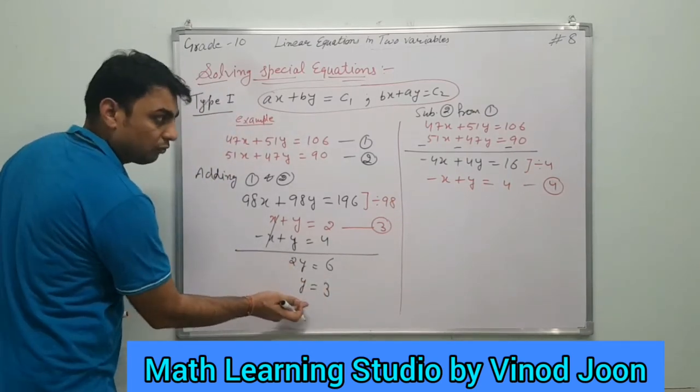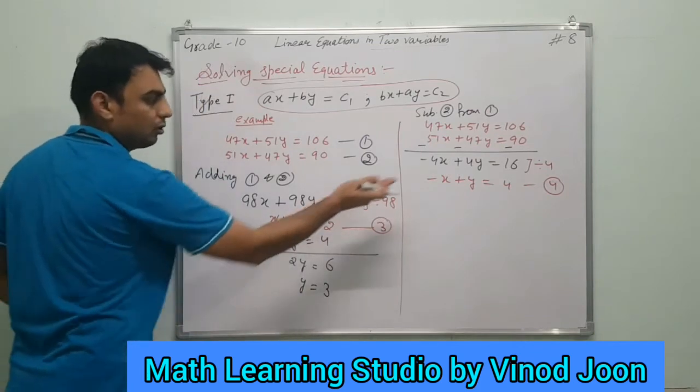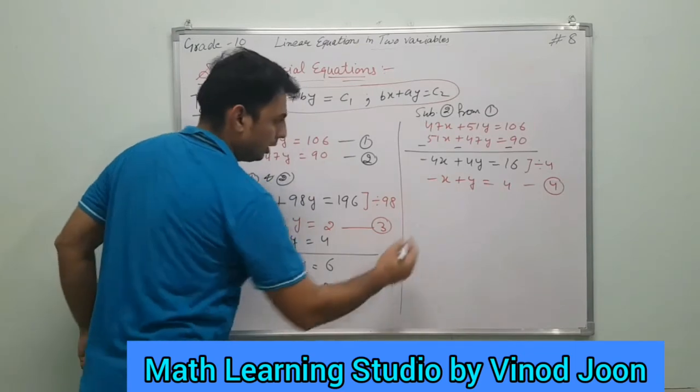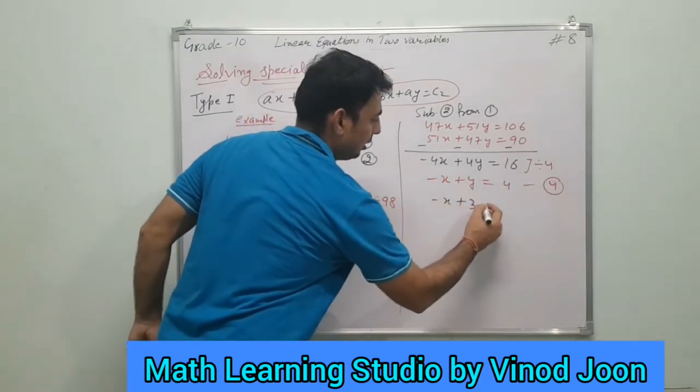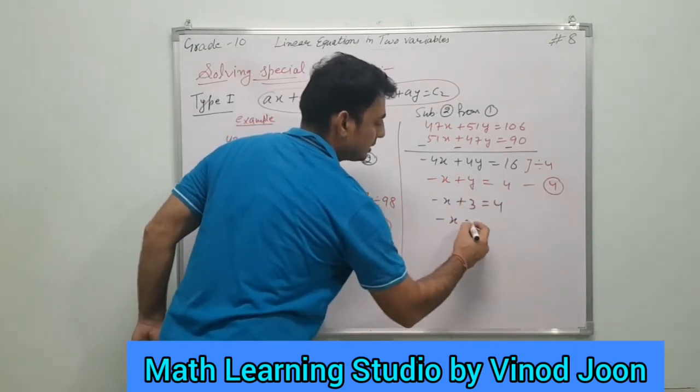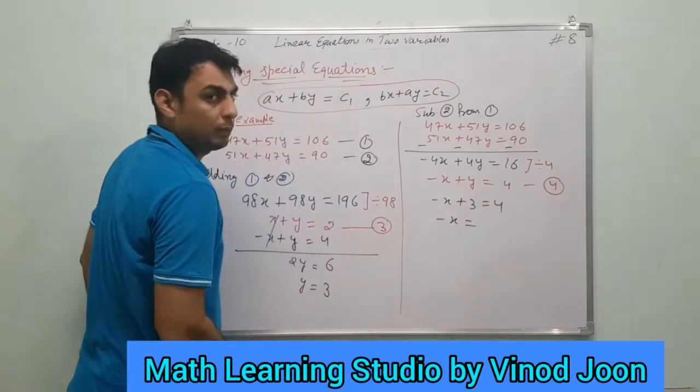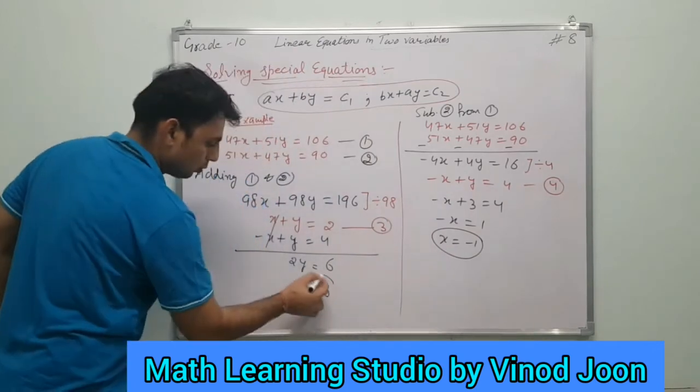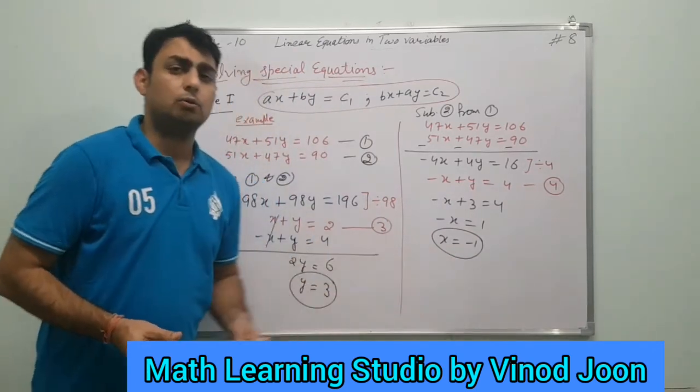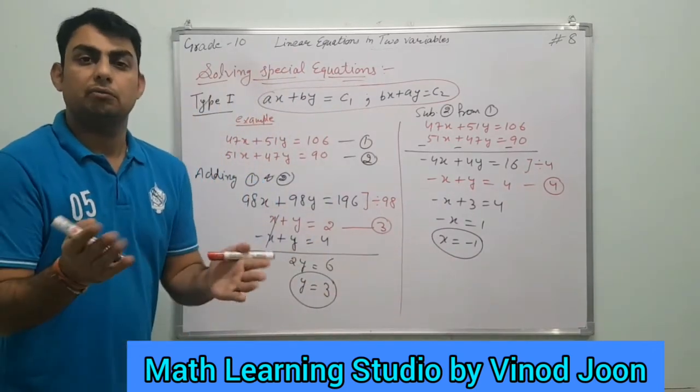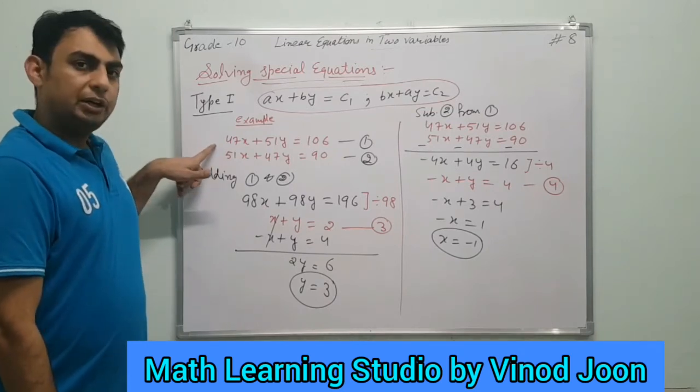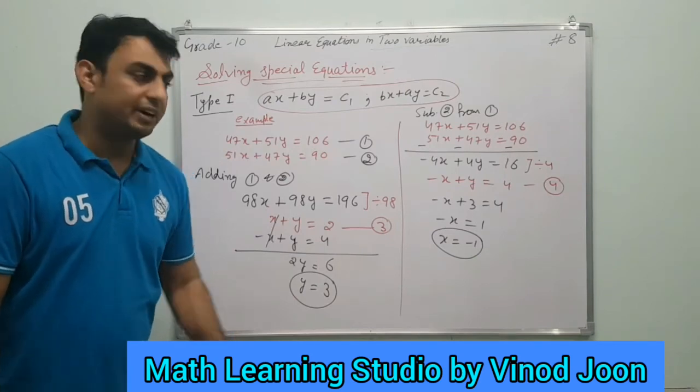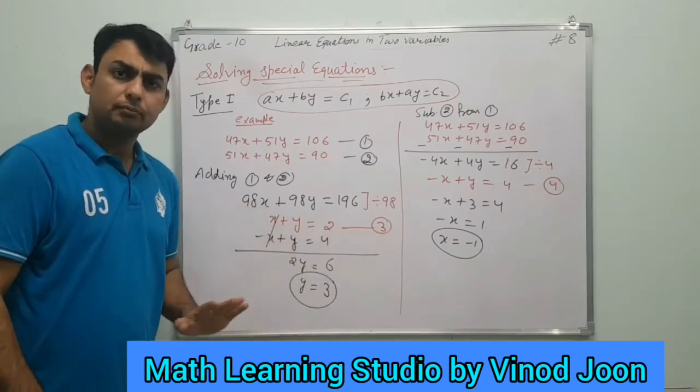If we now put the value of y in any of these two equations, 3 or 4, we can get the value of x very easily. If -x + 3 = 4, then -x = 4 - 3 = 1, so x = -1. Therefore y = 3 and x = -1. You can verify by putting the values of x and y in these two original equations, and you will see they are also satisfied by these values.